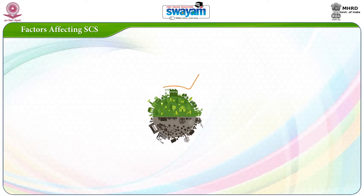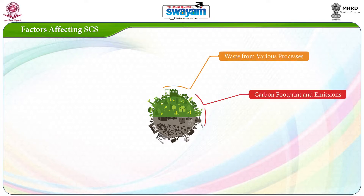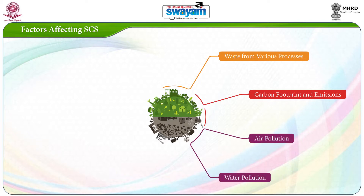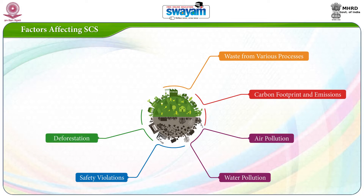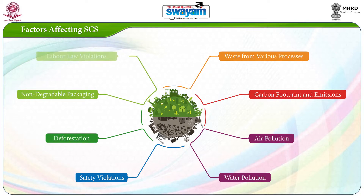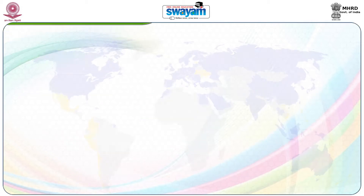The factors affecting supply chain sustainability are waste from various processes, carbon footprint and emissions, air pollutants, water pollution, safety violations, deforestation, non-degradable packaging, and labor law violations.